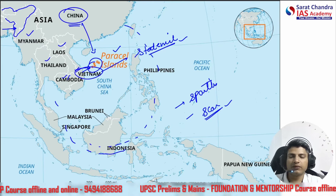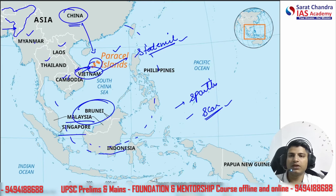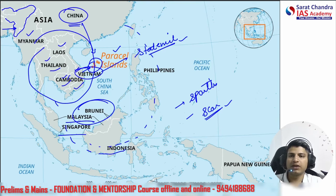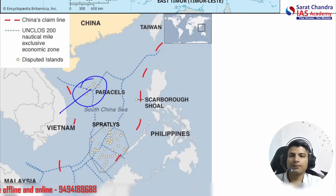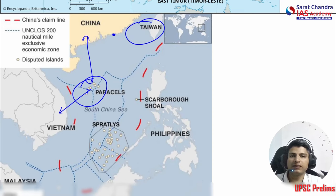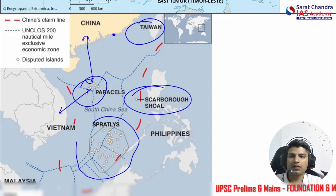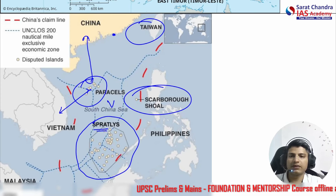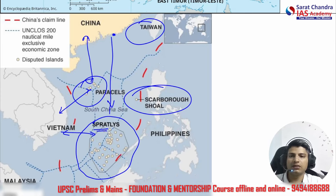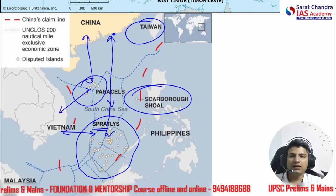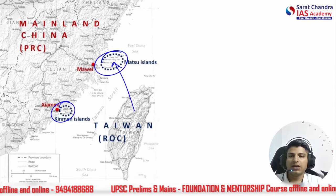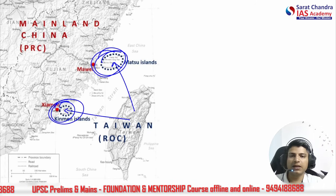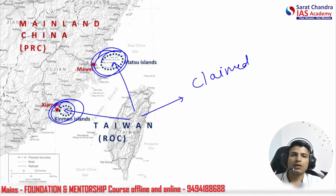Also visible are Brunei, Malaysia, Singapore — remember which is Vietnam, Cambodia, Thailand, Laos. The Paracel Islands are nearer to Vietnam than to China. Taiwan is here. Kinmen Islands are located near China. The Scarborough Shoal and Spratly Islands are also marked. The Spratly Islands are more in number than the Paracels and located closer to Vietnam. Matsu and Kinmen Islands are near Taiwan but very close to China and claimed by Taiwan.